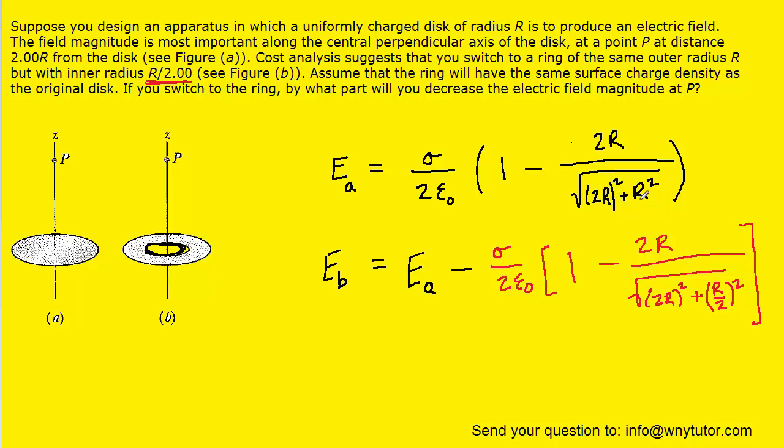Next it might be helpful to simplify the expressions underneath the respective square roots. Underneath the first one we're going to have 4R squared plus R squared so that'll make 5R squared. And then underneath the second square root we're going to have 4R squared plus 1 fourth R squared. And that'll simplify to 17 fourths R squared.